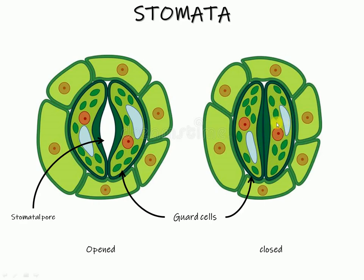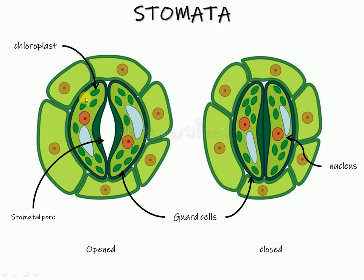In the guard cells, the pink structures are the nucleus. The green bean-shaped structures are chloroplasts where the light reaction occurs. And the light green part in the guard cell is called the stroma region where the dark reaction takes place.